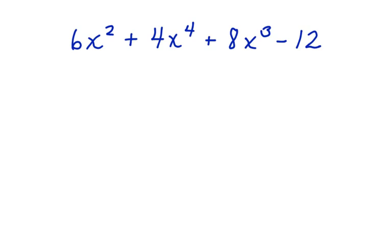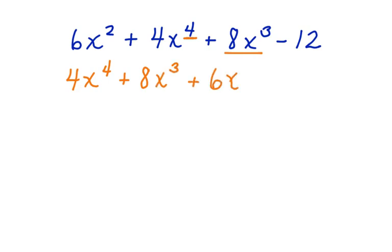Let's look at this polynomial: 6x squared plus 4x to the fourth plus 8x cubed minus 12. We want to rewrite this polynomial in standard form. We start with the greatest degree, which is to the fourth, and we write 4x to the fourth. The next one is plus 8x to the third, plus 6x squared, and finally we include the constant, minus 12. Now this polynomial is in standard form.